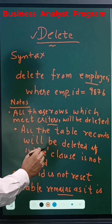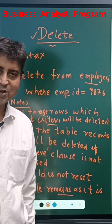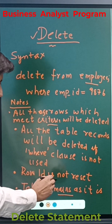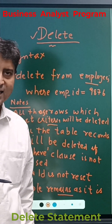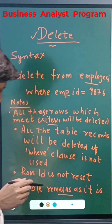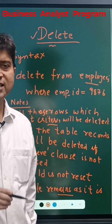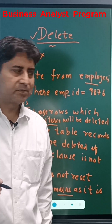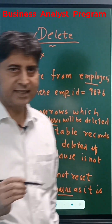All table records will be deleted if the WHERE clause is not used, so a caution: the WHERE clause should always be utilized in the delete statement. The row ID is not reset — there is one internal ID maintained in Oracle which maintains the uniqueness and identification of rows, so that is not reset. The underlying table object remains as it is; the employee table remains in the database.